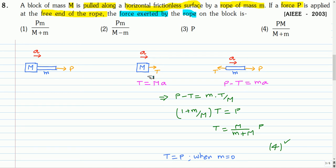let the tension which the rope pulls this mass M be T. So from this we get T equal to Ma, and from the free body diagram of the rope, which has got a mass m, we get P minus T as ma.